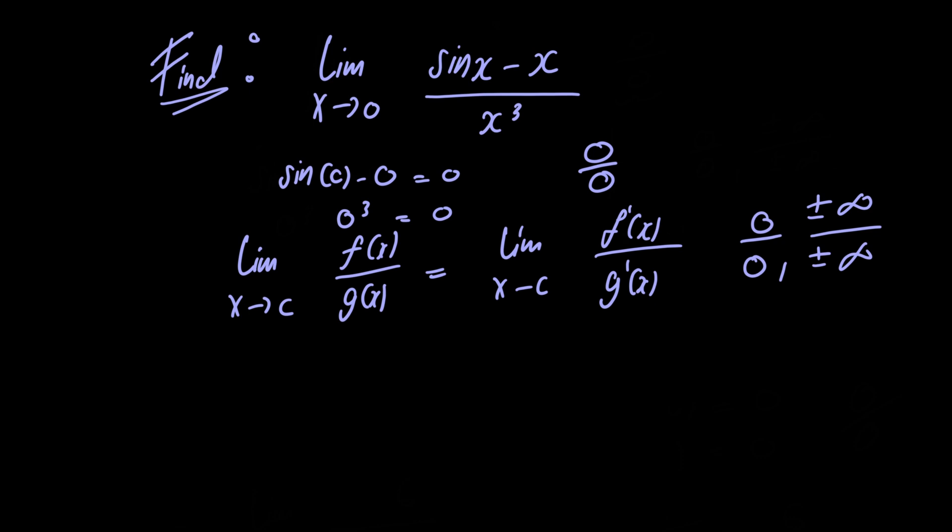So what we're going to do is apply L'Hopital's rule to this problem. We're going to have the limit as x approaches 0. The derivative of the numerator is cosine of x minus 1, and the derivative of the denominator is 3x squared.